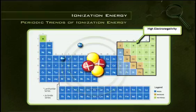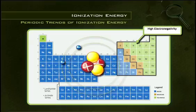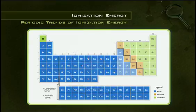Elements that have a high electronegativity also tend to have high ionization energy. A high electronegativity suggests that an element takes electrons in a chemical reaction rather than giving them up. It follows, then, that it would take high ionization energy to remove an electron from an atom with high electronegativity.